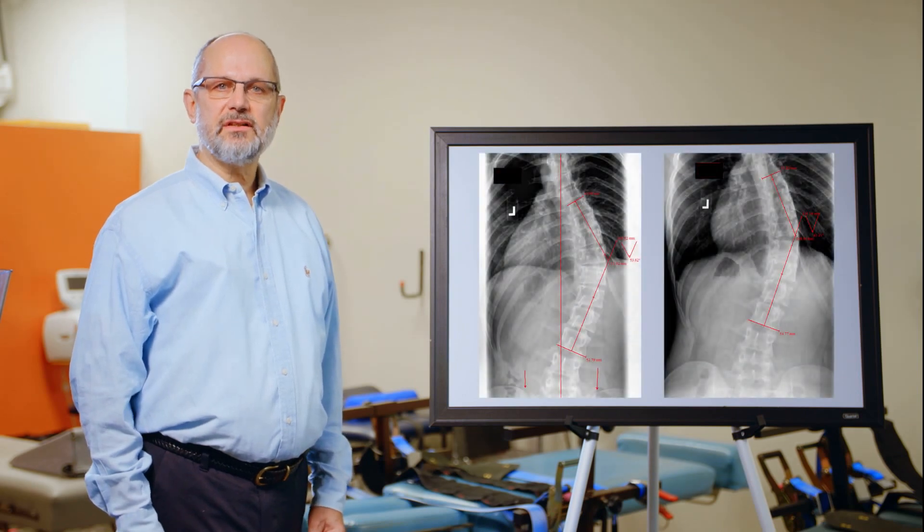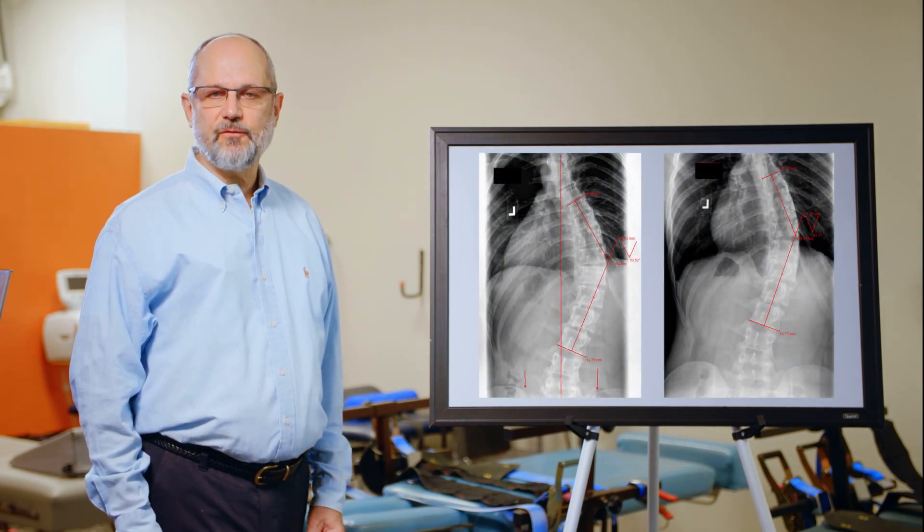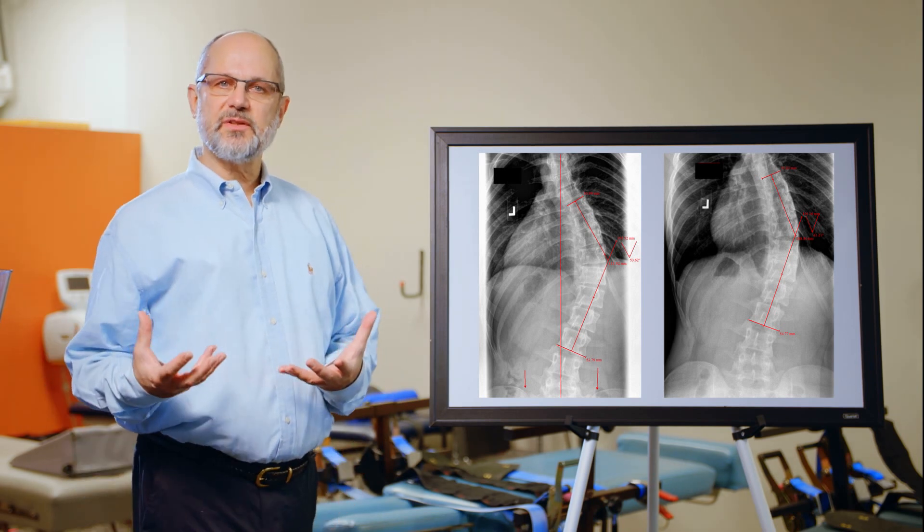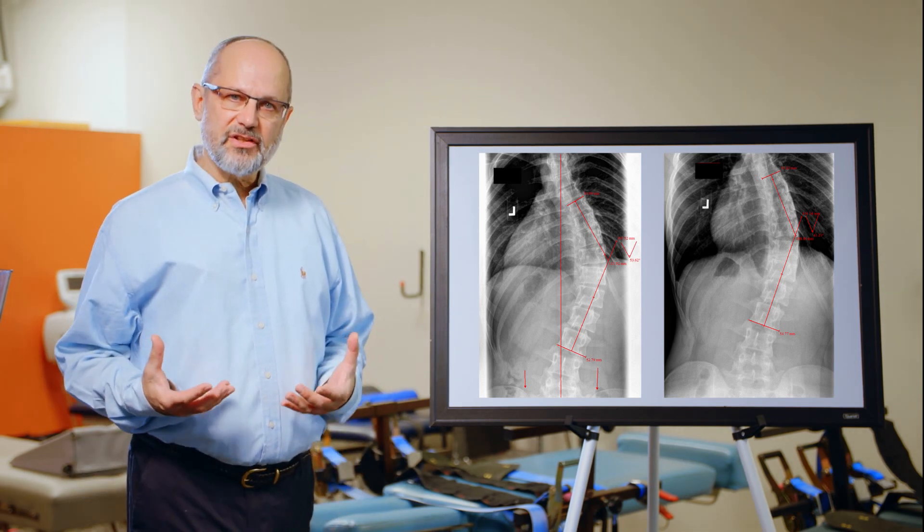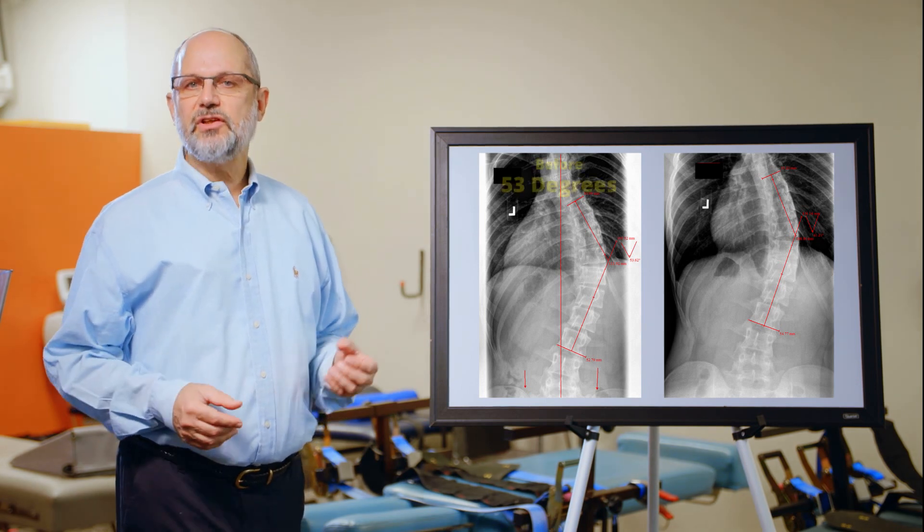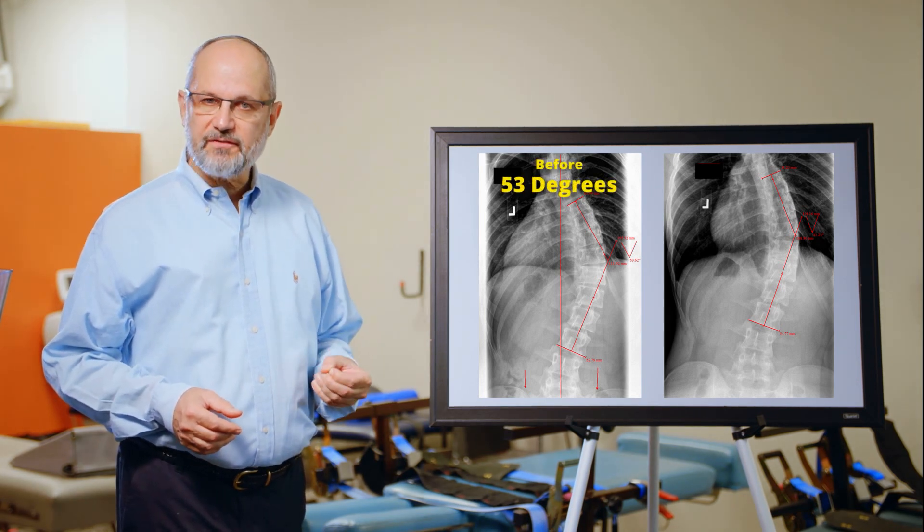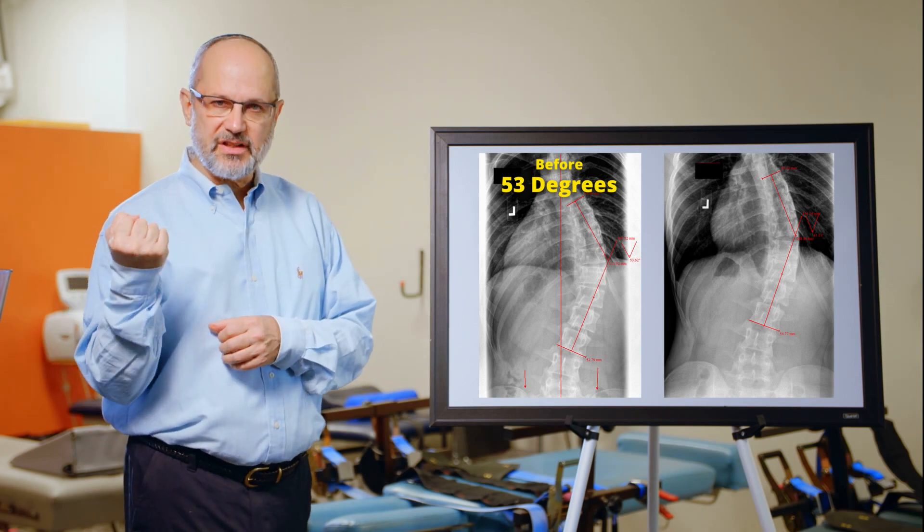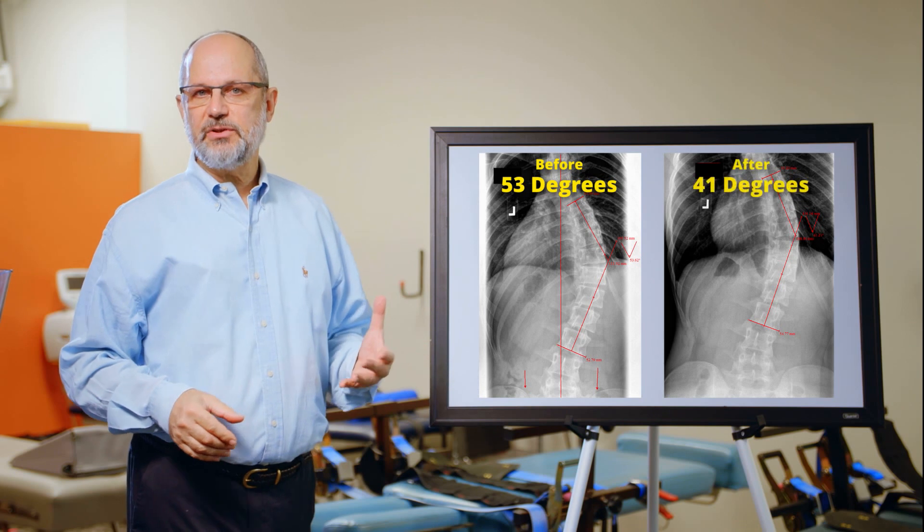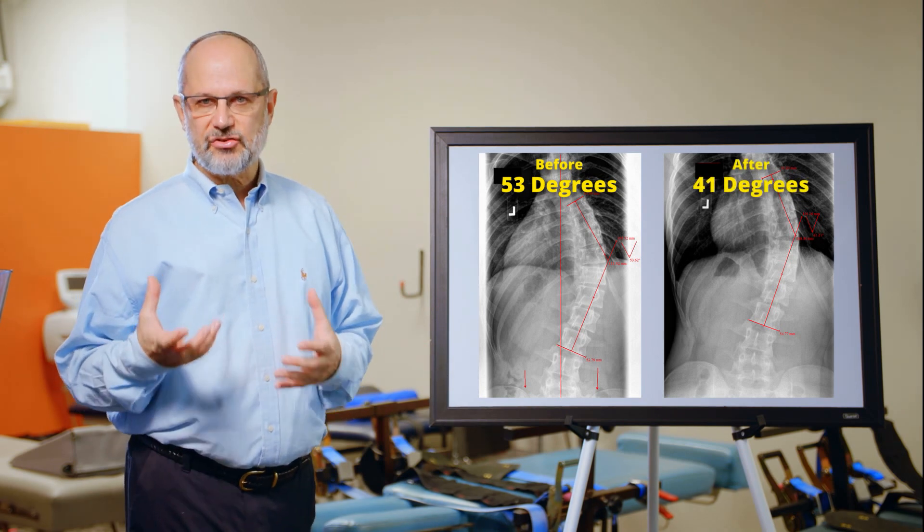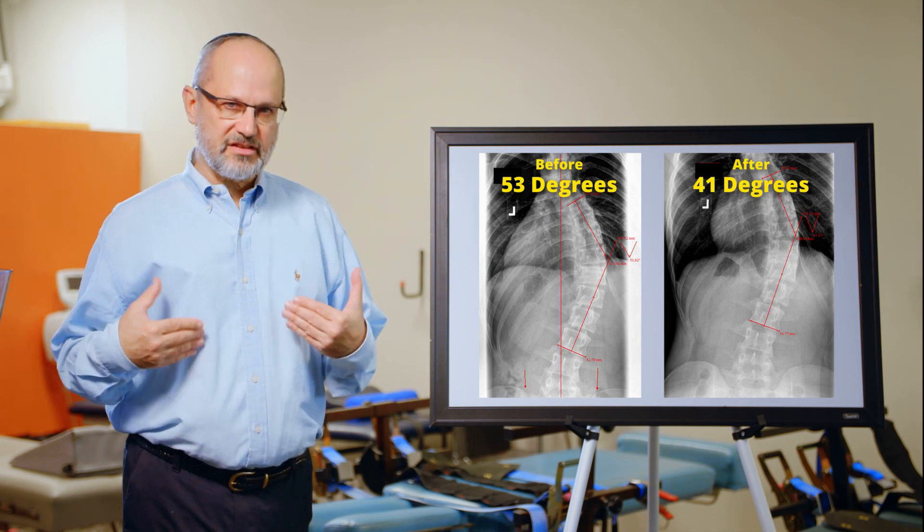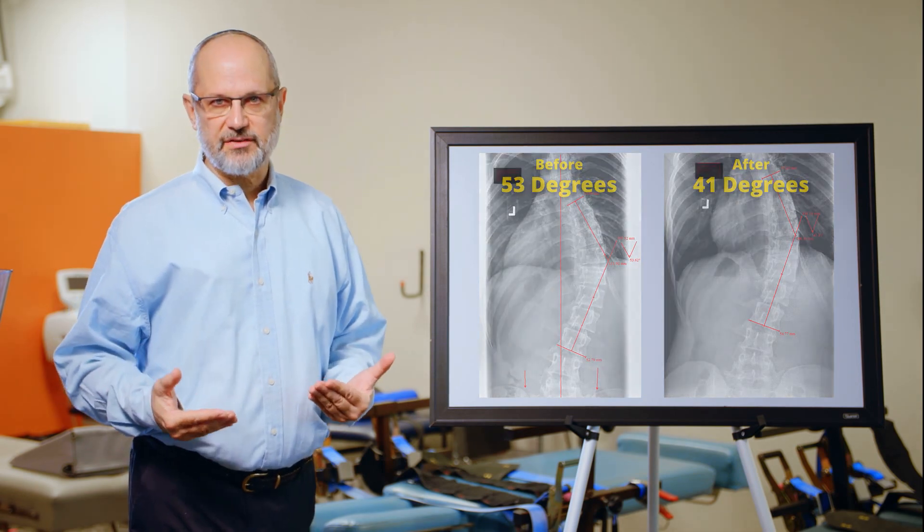Here are two x-rays showing before and after treatment of rotoscoliosis. I want you to see that rotoscoliosis can be successfully treated with conservative methods. In the before film, you can see strong twisting of the spine and a large curve. In the after film, the curve is reduced and there's significantly reduced twisting. This is a successfully treated rotoscoliosis.